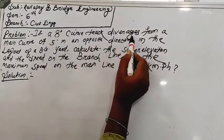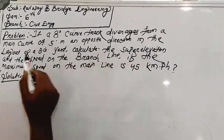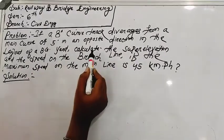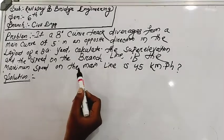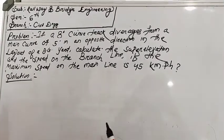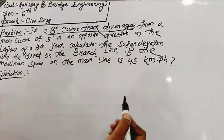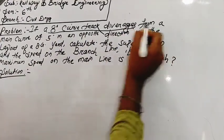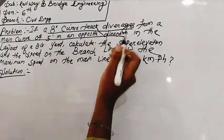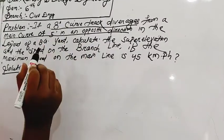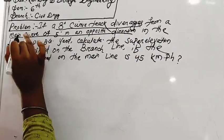If an 8-degree curve diverges from a main curve of 5 degrees in an opposite direction, in the layout of a BG yard, calculate the super elevation and the speed on the branch line, if the maximum speed of the main line is 45 km per hour.